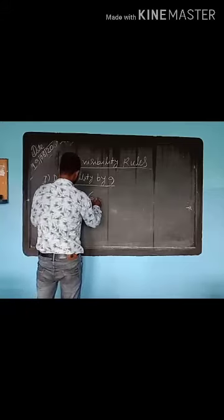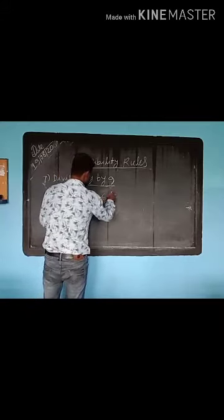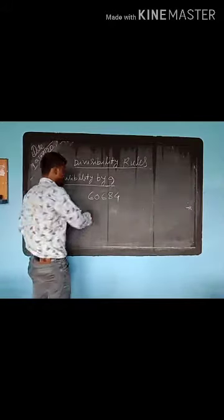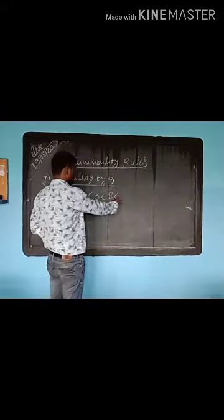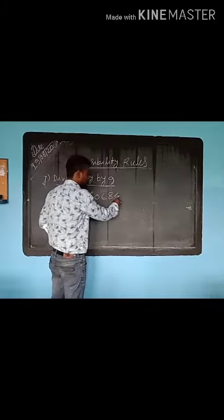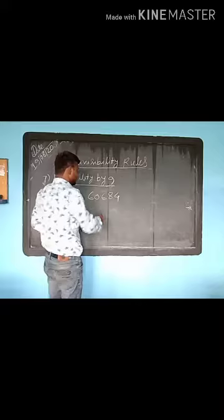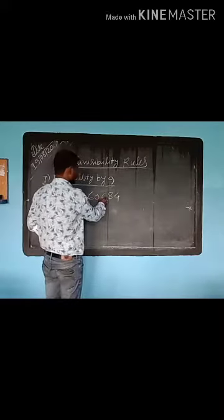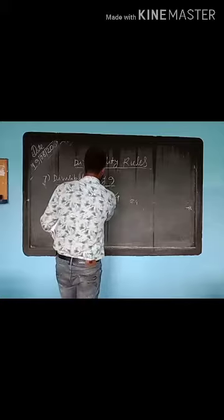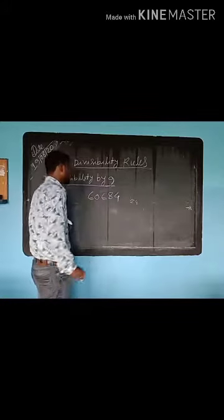Suppose 60684. Is this number divisible by 9 or not? When you check, you just add the digits: 6 plus 0 plus 6 plus 8 plus 4. You get 24.